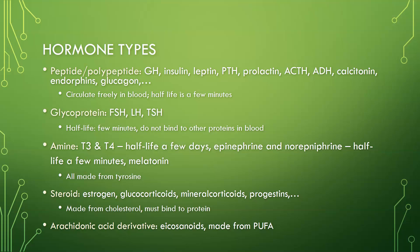Then you get the steroids. Examples include estrogen, glucocorticoids such as cortisol, mineralocorticoids like aldosterone, progestins, and testosterone, and all of that. They are all made from cholesterol, and in order to be transported in the blood, they must bind to protein. And then you have your arachidonic acid derivatives — your eicosanoids — that are made from polyunsaturated fatty acids.